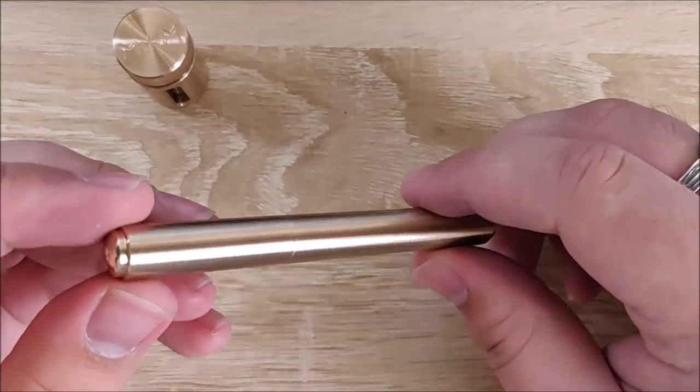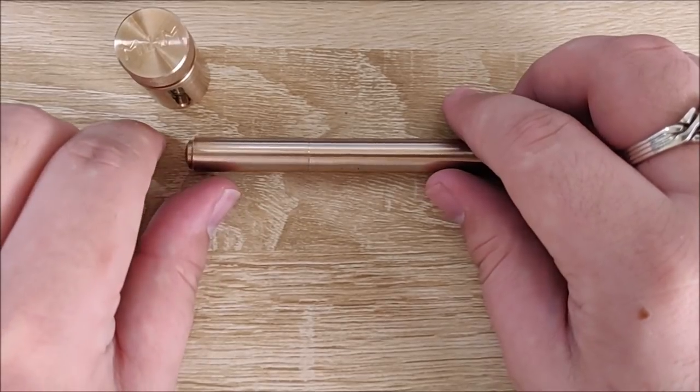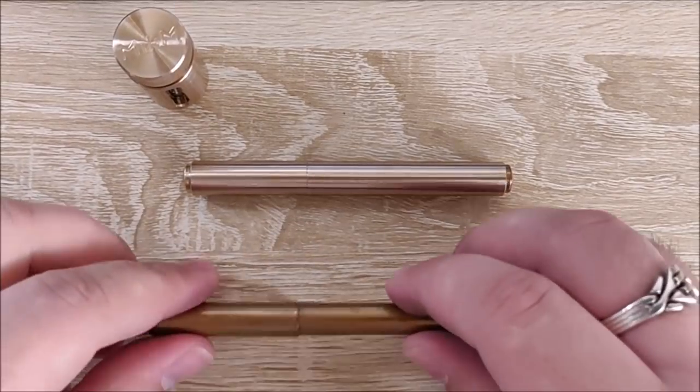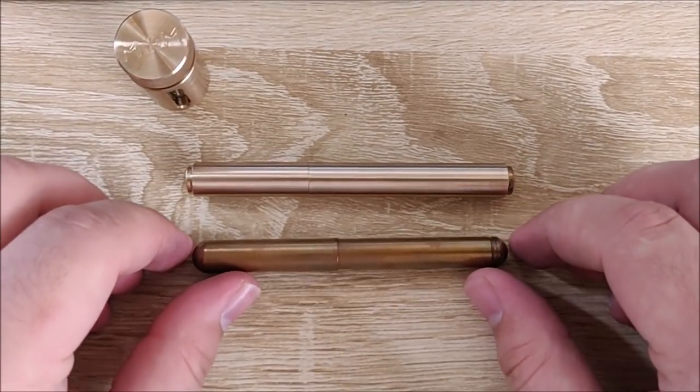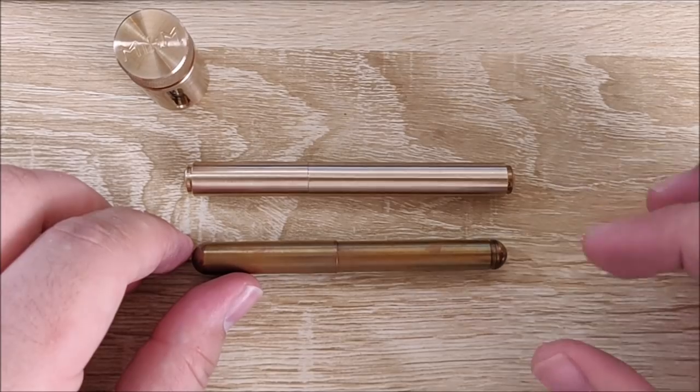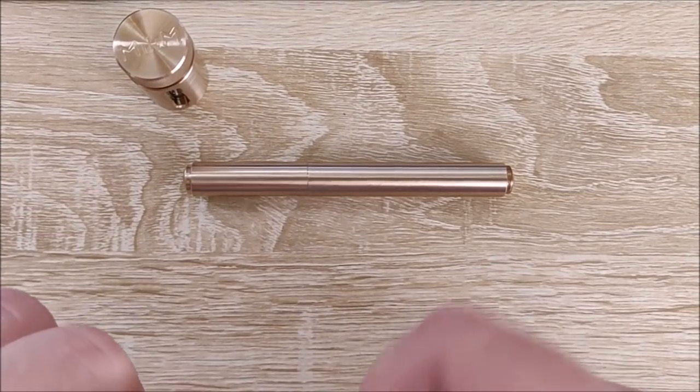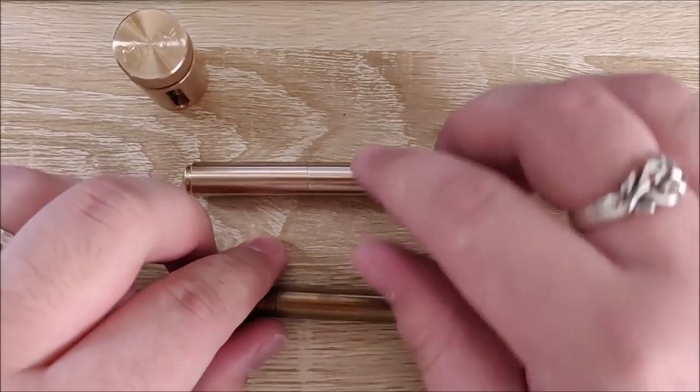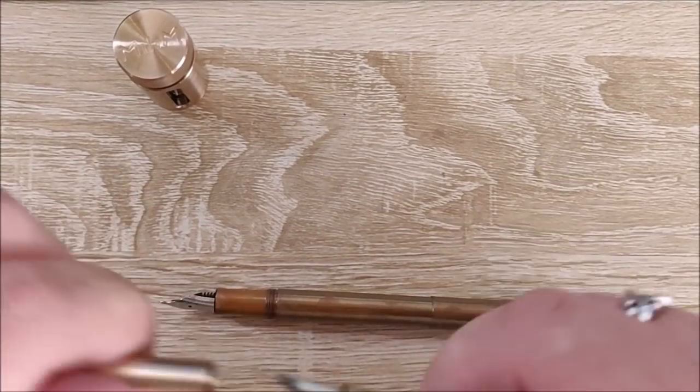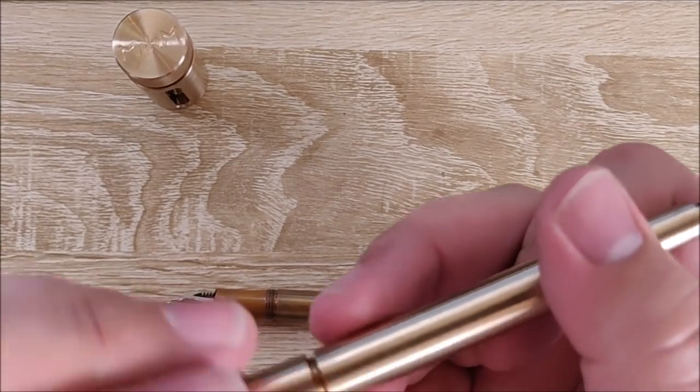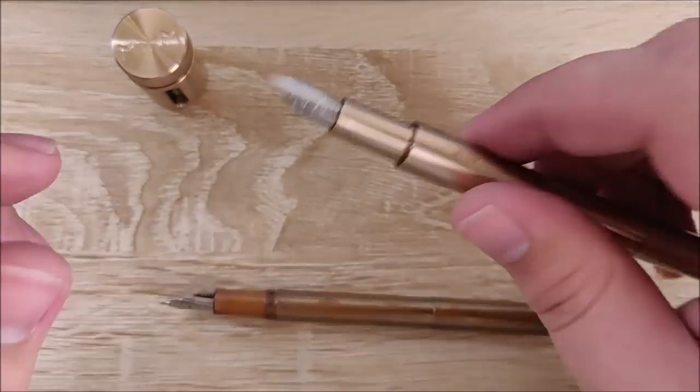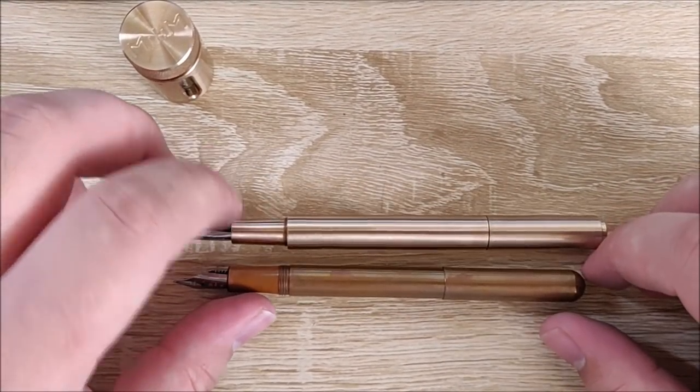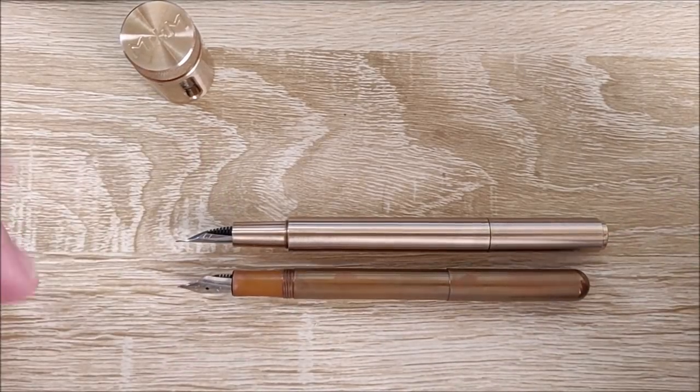But let's go ahead and take a look. So here is the Millim fountain pen. Here is the Kaweco Lilliput in copper. So you can see this pen is a little bit longer and a little bit wider. Let's go ahead and compare the posted lengths. This pen is a little bit longer than the Lilliput. So if the Lilliput is a little bit too short for you posted, maybe check this one out.